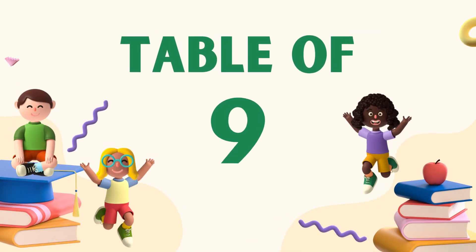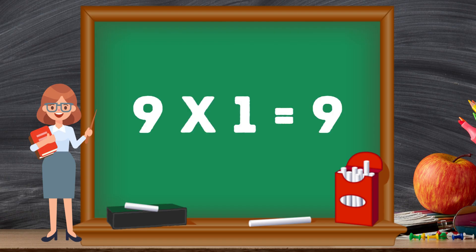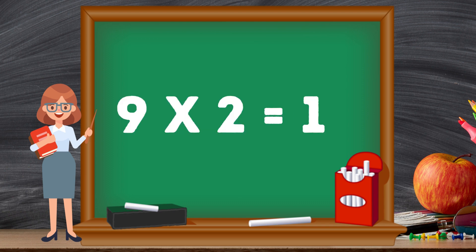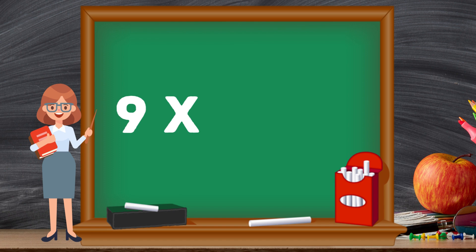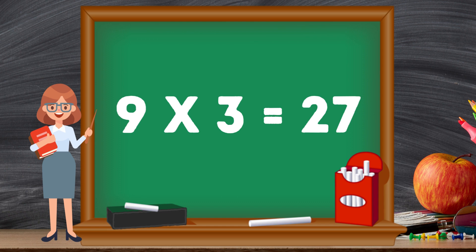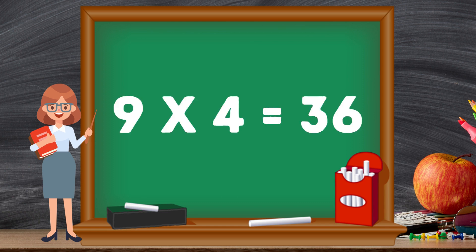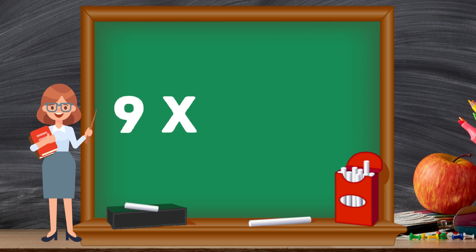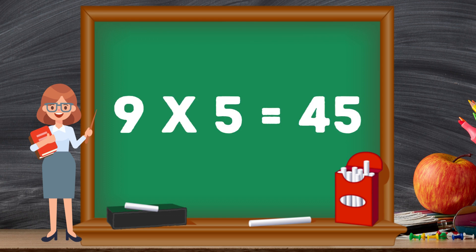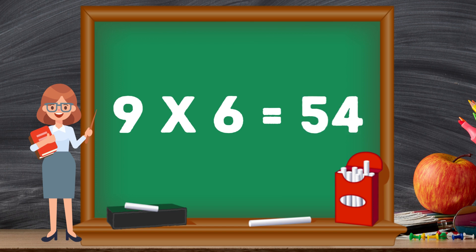Let's revise. 9 1's are 9. 9 2's are 18. 9 3's are 27. 9 4's are 36. 9 5's are 45.